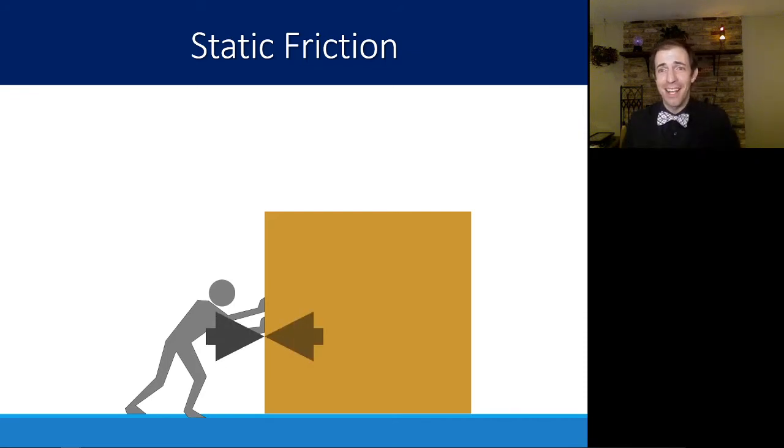But static friction, if I push on a block and it doesn't move, the friction is going to push back on me exactly the same amount that I am pushing on it. If I push harder but it still doesn't move, it's just pushing back harder. So that static friction has a varying amount just to counteract what I am pushing with it still not moving. Once it starts going, it becomes a lot easier to move.